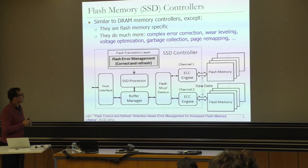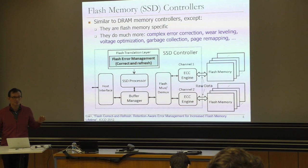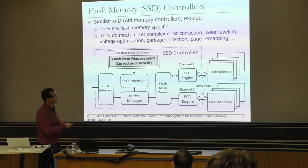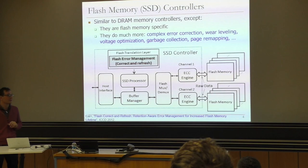Flash memory has a lot more needs. These controllers have some general-purpose processor parts, and also parts that are real hardware and firmware, because they need to make decisions very quickly. For example, a lot of the ECC engines are implemented in hardware. They need to do very complex error correction — correcting, for example, 40 bits or so across 8,000 bits, because there are a lot of errors in these memories.